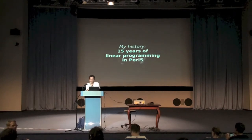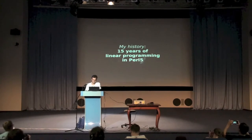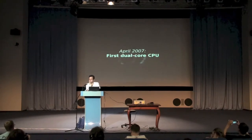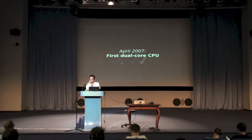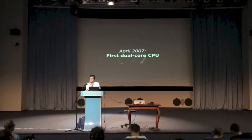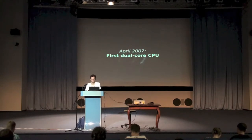My history is I've been programming in Perl for 15 years, always in a linear paradigm. In 2007 it was the first time I got a dual-core CPU, but it didn't really change my attitude because they always kept telling you that you have one core in the background to handle responsiveness of your desktop and background processes, so I was very fine with that.